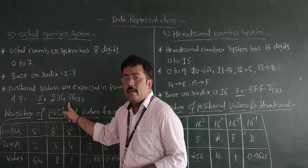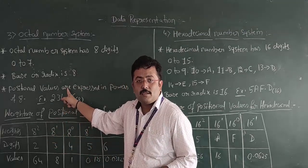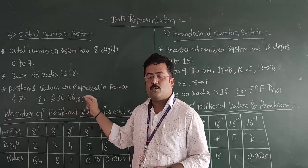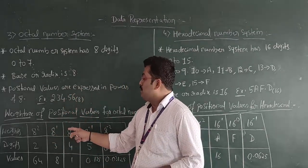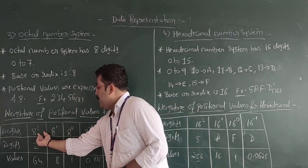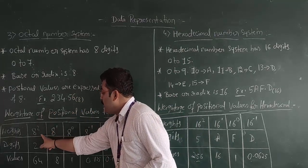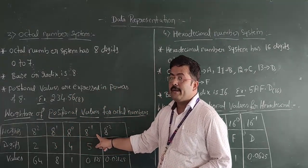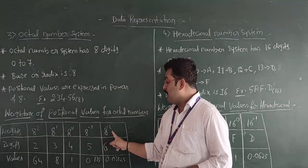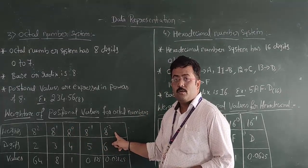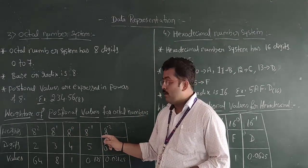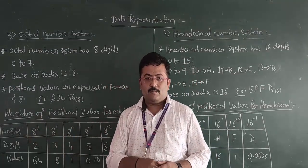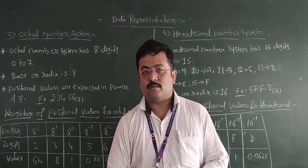After the decimal point, the positional values are 8 raised to minus 1 and 8 raised to minus 2, and so on. So the positional weights for the number 234.56 are: 8 squared, 8 raised to 1, 8 raised to 0, 8 raised to minus 1, and 8 raised to minus 2.